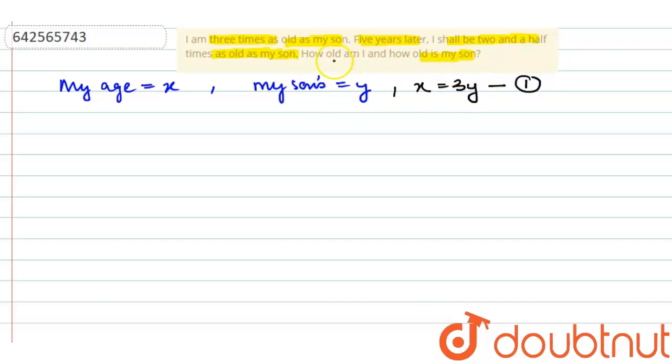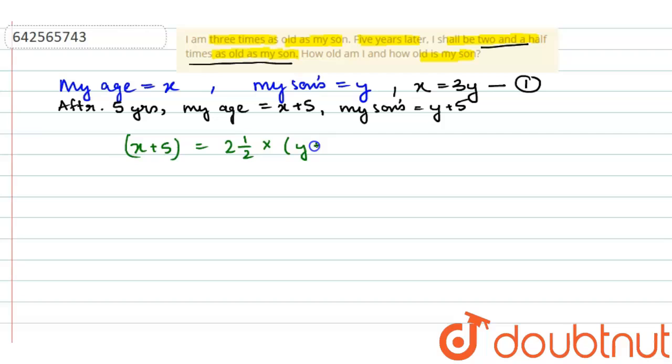After five years, my age will be x plus five years and my son's will be y plus five years. But it is given that after five years my age will be two and a half times as old as my son. So we have my age after five years will be two and a half times more than my son at that time, that is y plus 5.